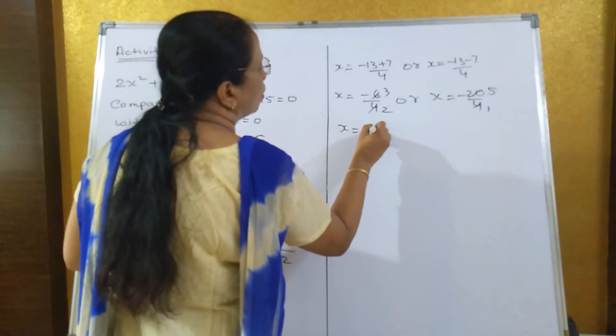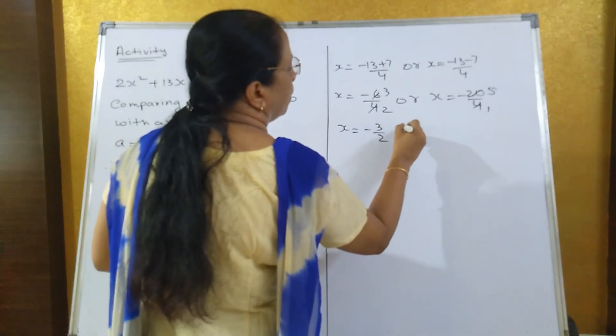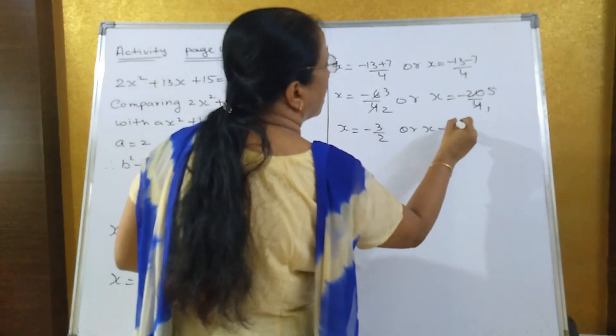So the value of x equals minus 3 upon 2, or x equals minus 5.